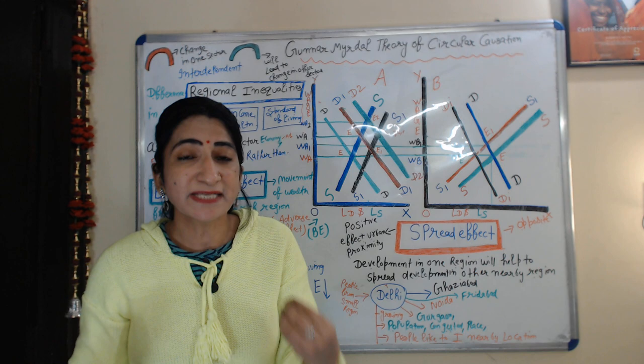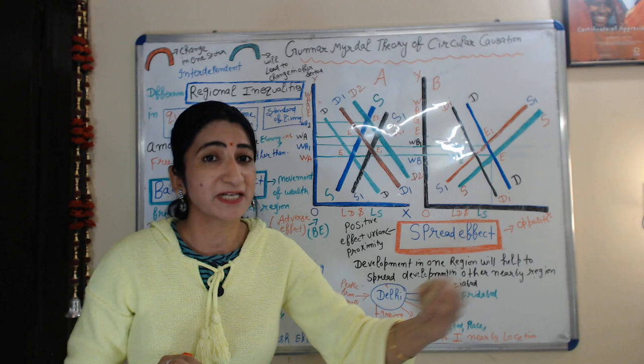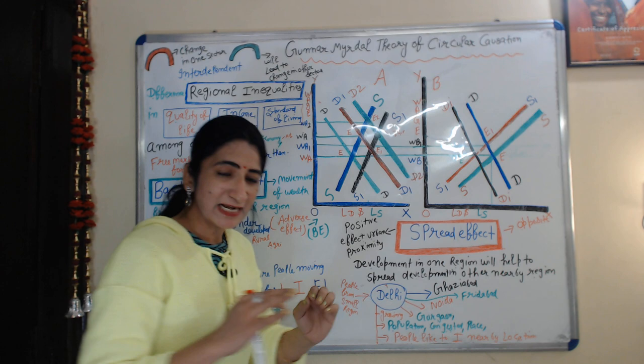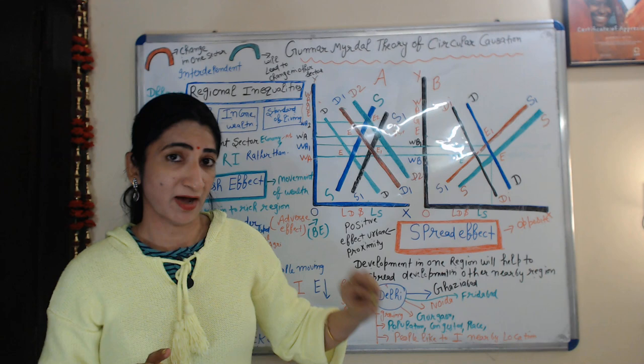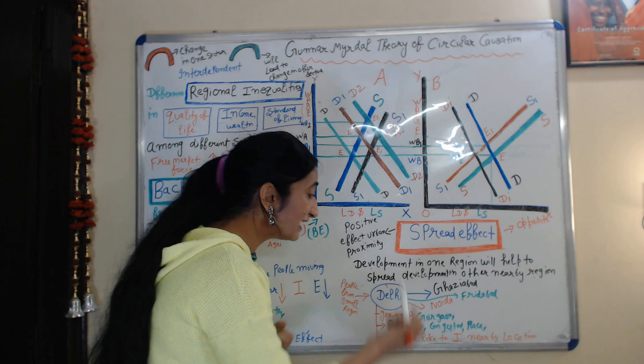Development in one region will help to spread development to other nearby regions. If one area is developing, it will also cause expansion in other nearby regions. For example, Delhi is growing very fast. More and more people from small regions are coming to Delhi, and as a result, the population of Delhi is growing very fast.